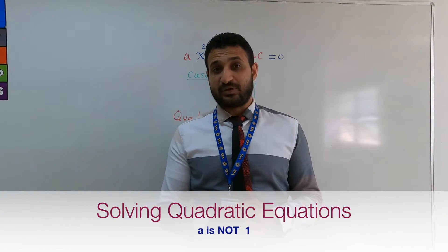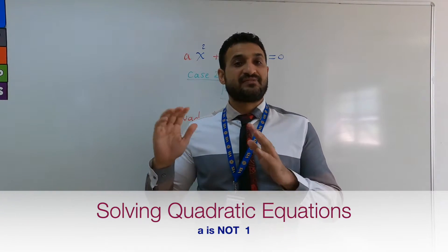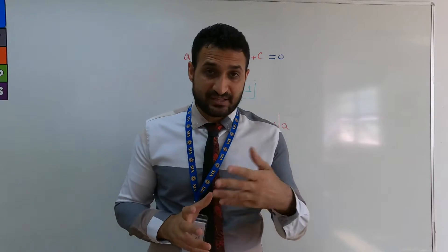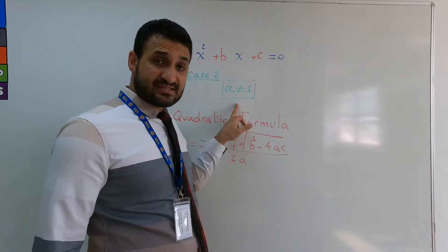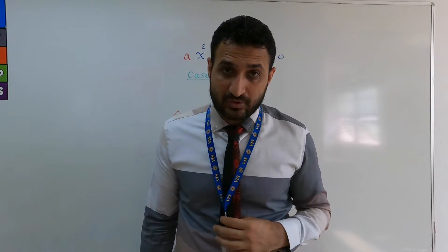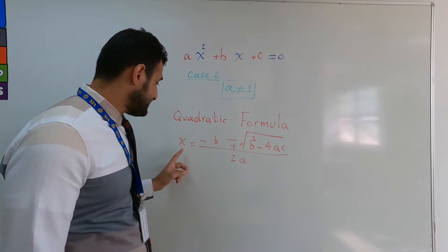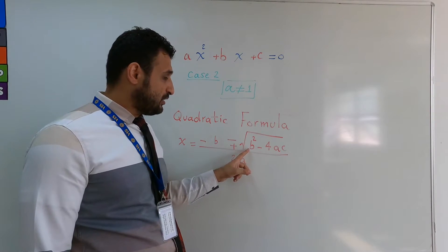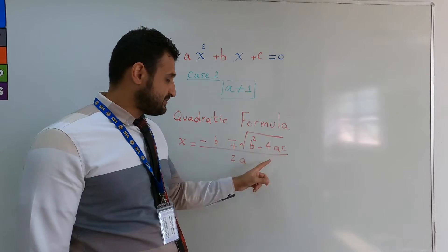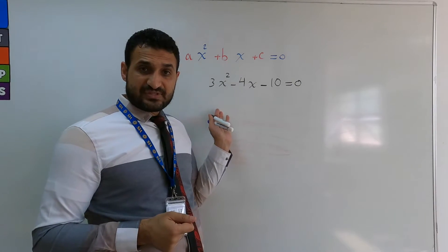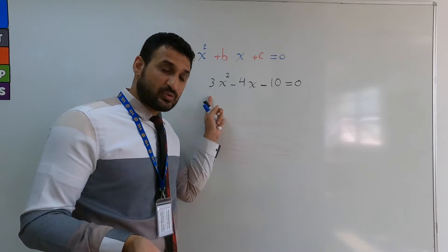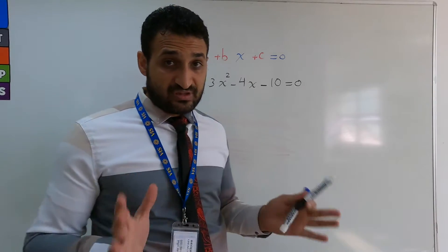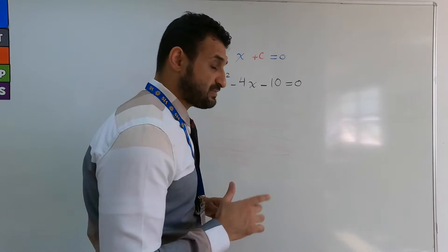Now, what if a doesn't equal 1? Instead of the product-product factoring method, which is trickier, just use the quadratic formula: x = (−b ± √(b² − 4ac)) / 2a. For example, here a is 3, b is negative 4, c is negative 10. Since a doesn't equal 1, use the quadratic formula directly.